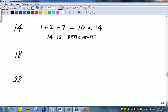18 is abundant because its proper divisors are 1 and 2 and 3 and 6 and 9. And they add up to 21, which is too much. 18 is abundant.